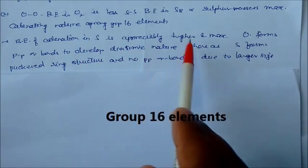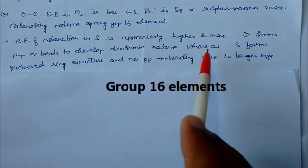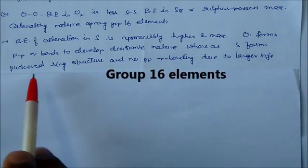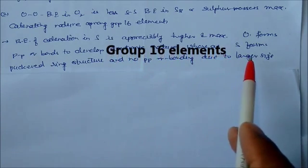Oxygen forms p-p pi bonds to develop diatomic nature, whereas sulfur forms puckered ring structures and there is no p-p pi bonding due to its larger size.